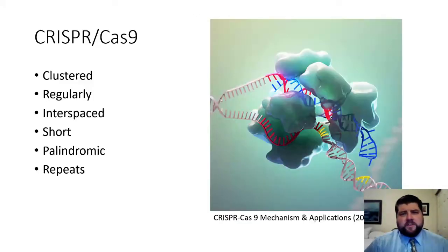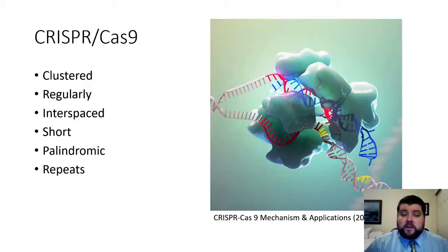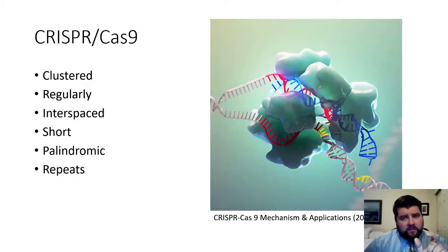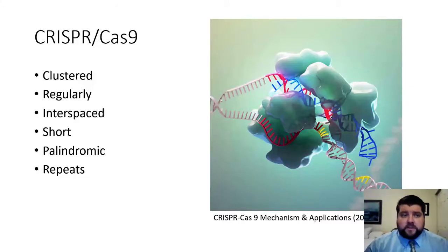What does CRISPR stand for? CRISPR stands as an acronym for Clustered Regularly Interspaced Short Palindromic Repeats that exists on the DNA molecule. These allow for little clusters of DNA segments that are used within bacterial immune systems.